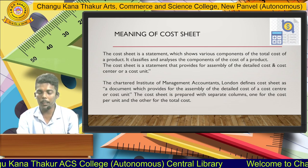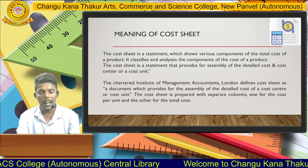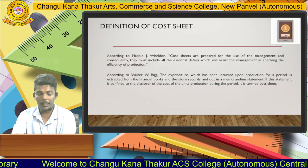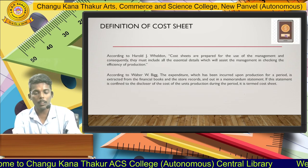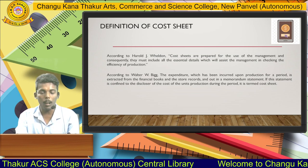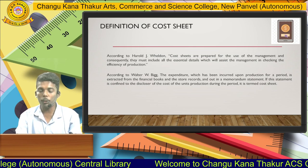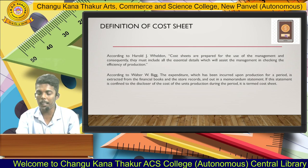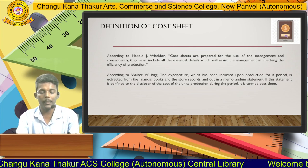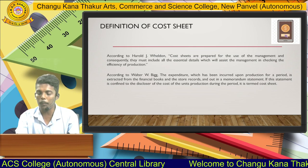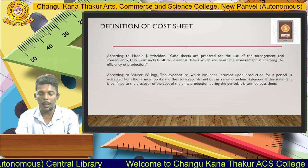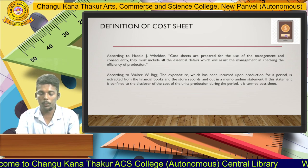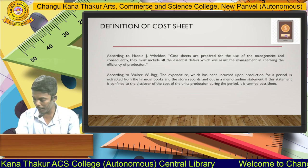The Chartered Institute of Management Accountants, London, defines cost sheet as a document which provides for the assembly of the detailed cost of a cost center and cost unit. According to Harald J., cost sheets are prepared for the use of management, and consequently they must include all essential details to assist management in checking the presence of product. According to Walter W.B., the expenditure incurred upon production for a period is extracted from the financial books and store records into a memorandum statement. If this statement is confined to the disclosure of cost per unit of production during the period, this statement is also known as the cost sheet.